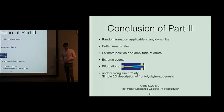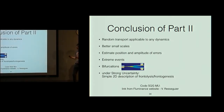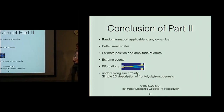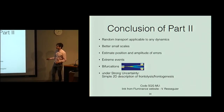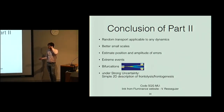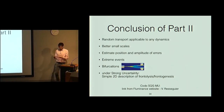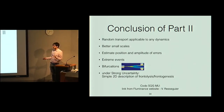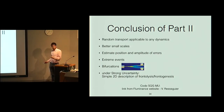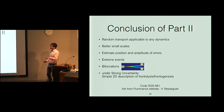To conclude this part: we have a random transport applicable to any dynamics, with better small scales, the ability to estimate position and amplitude of error and extreme events. We can also study bifurcation of different scenarios in a fluid dynamic system, and we have a simple 2D description of frontolysis and frontogenesis at the ocean surface with the SQG model under strong uncertainty.